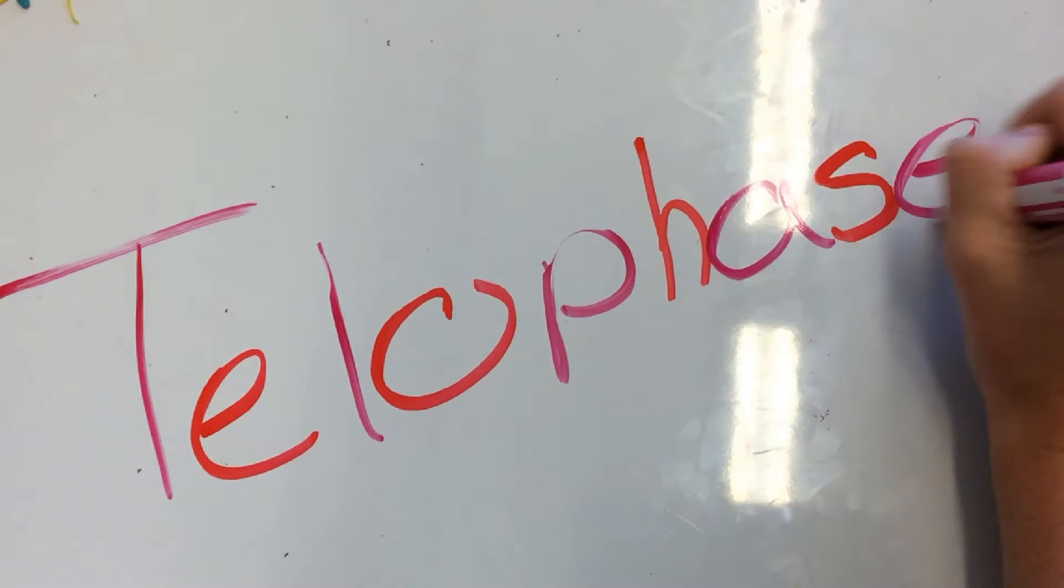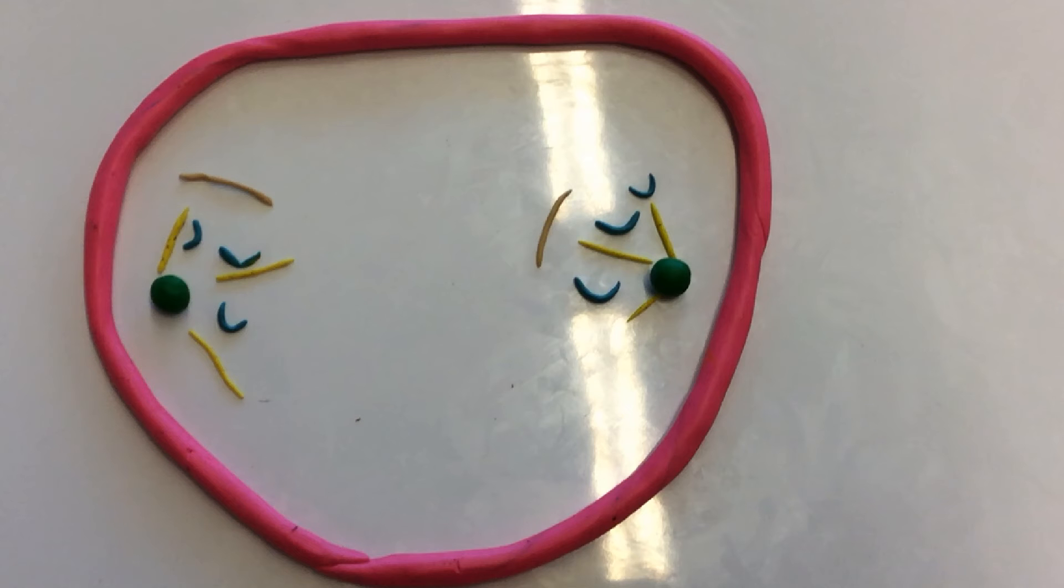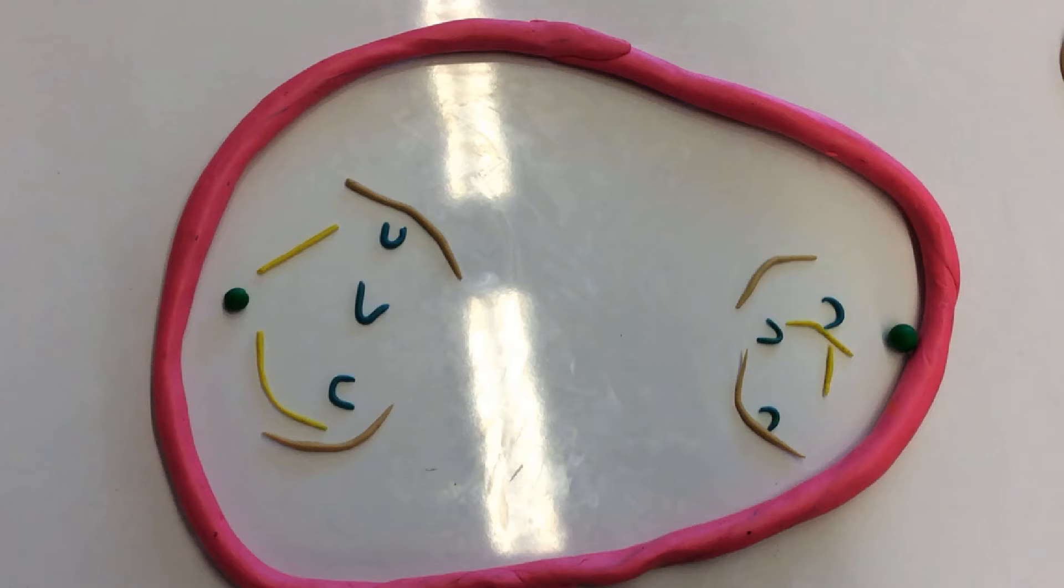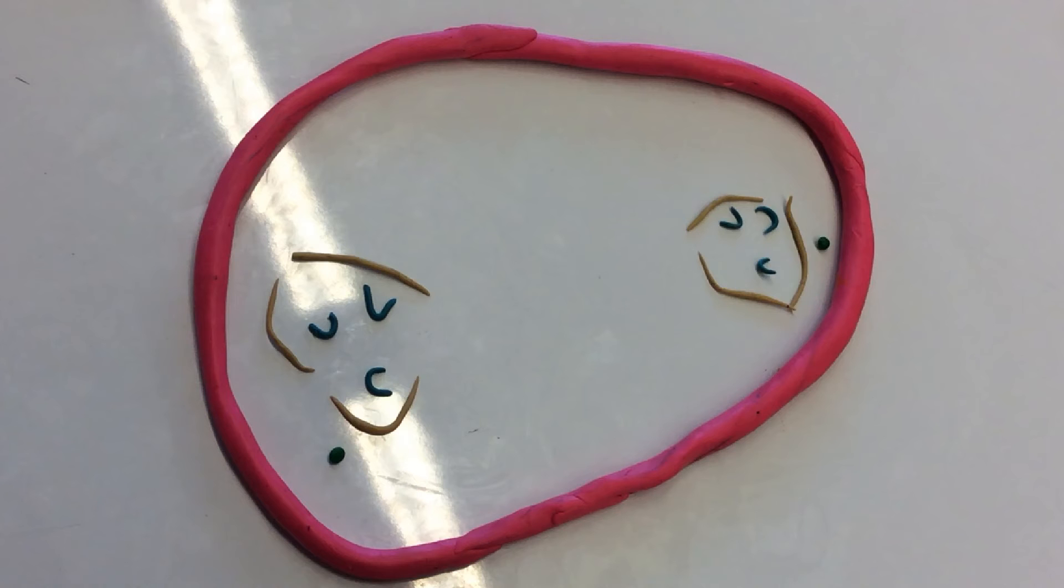In telophase, the chromatids arrive at the opposite poles of the cell. New membranes are formed around the daughter nuclei. The chromosomes and spindle fibers disperse and can no longer be seen.